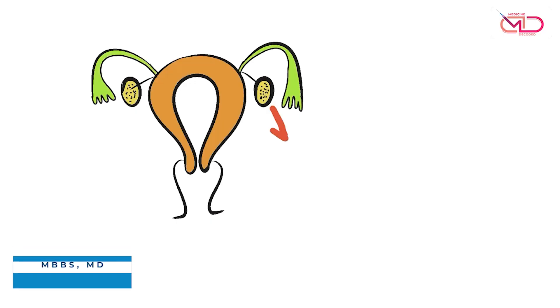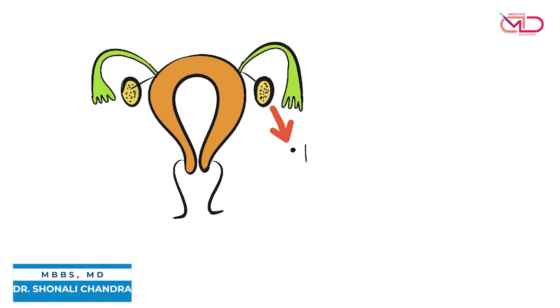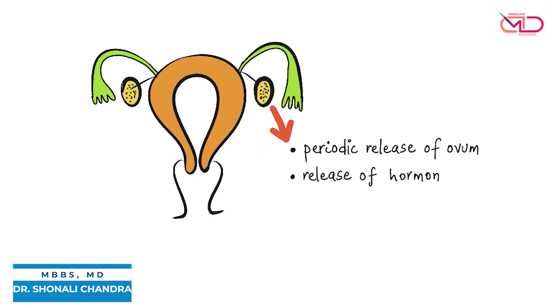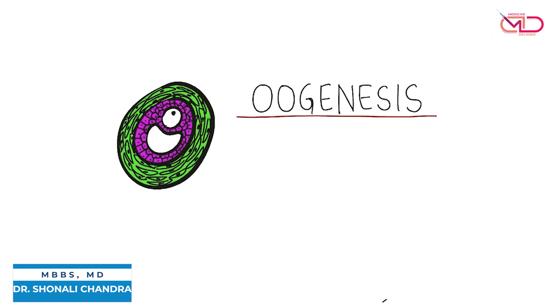In the female reproductive system, ovaries are the site where each month an egg or ovum is released. It is also the site for release of hormones. In this video we will talk about the process of oogenesis, which is the development of mature oocytes within the ovaries.